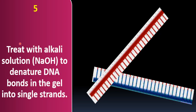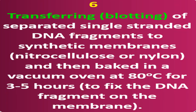The fifth step is treatment with alkali solution — NaOH (sodium hydroxide) — to denature DNA in the gel into single strands. NaOH denatures the DNA, meaning it separates the two strands. Since DNA is a double-stranded structure, using NaOH causes these two strands to separate, as you can see here.